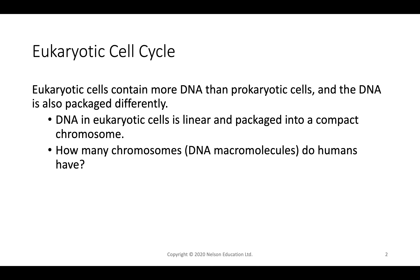To discuss cellular reproduction, we should talk about the cell cycle. Eukaryotic cells are more complex than prokaryotic cells and have a compact chromosome. For prokaryotic cells, the chromosome is circular and generally just one. DNA in eukaryotic cells is linear, packaged into compact chromosomes, with multiple chromosomes depending on the organism. We as humans have 46 chromosomes — that's 23 chromosomal pairs. 22 of those pairs are autosomes, or non-sex chromosomes, and two are the X and Y, the sex chromosomes.